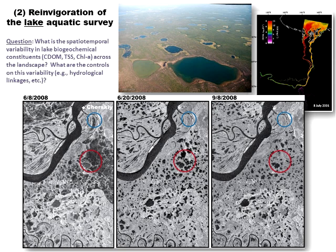The second thing is the opportunity to reinvigorate the lake aquatic survey this summer. What you see on the bottom is a time series of satellite radar imagery across the season back in 2008. The red and blue circles show variability; these lakes are highly dynamic seasonally. There's high seasonality in the linkages of these lakes with streams and rivers throughout the area, which is highly important for understanding how biogeochemical constituents get transported across the landscape.